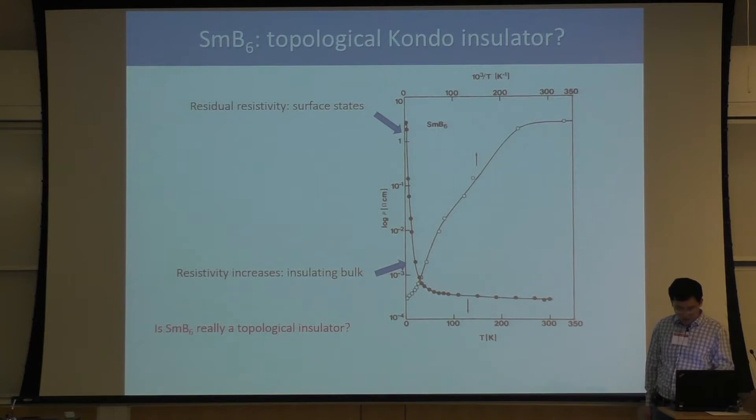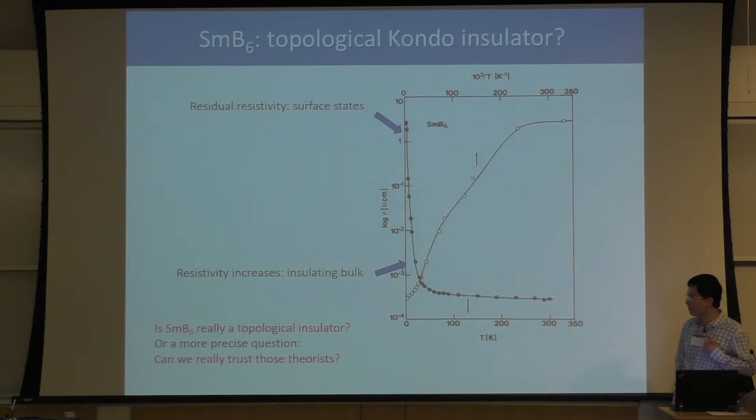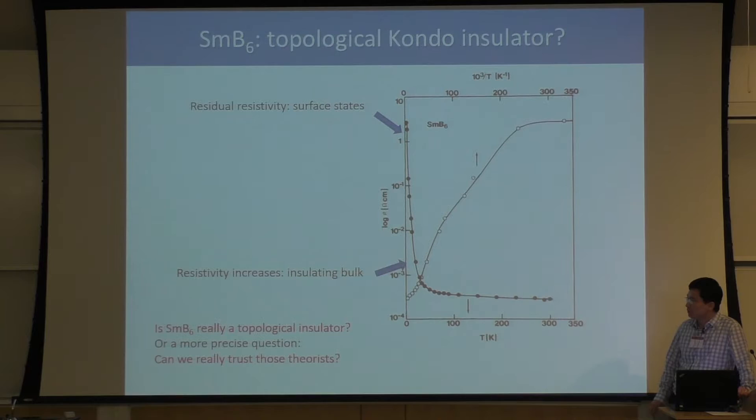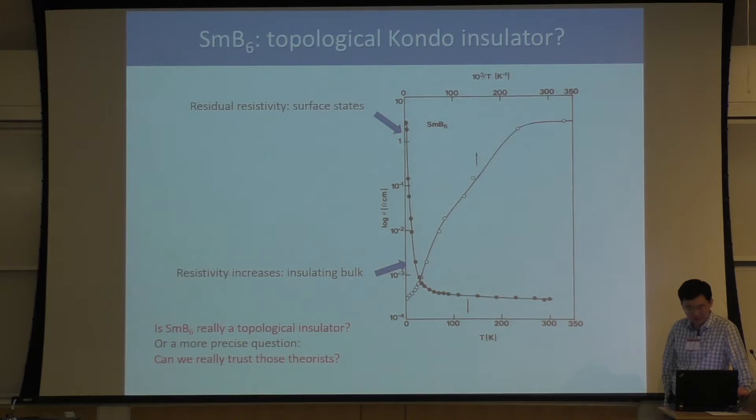A couple of years ago, my experimental colleagues asked me whether SMB6 is really a topological insulator. As a theorist, I must admit that for strongly correlated material like SMB6, it's probably a good idea for experimentalists to stay slightly skeptical of theorists, because strongly correlated materials are very hard to study theoretically and it's extremely hard to make precise and reliable predictions.